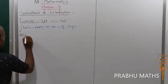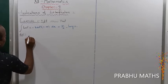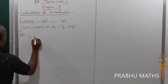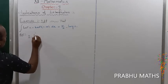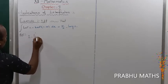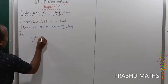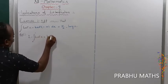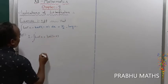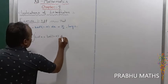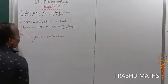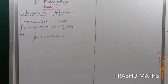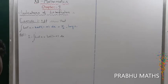Let us consider I equal to integral half into 0 to 1 of tan inverse of x plus tan inverse of (1 minus x) into dx. That is the given value: tan inverse of x plus tan inverse of (1 minus x).